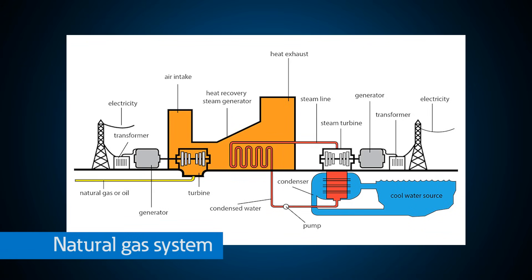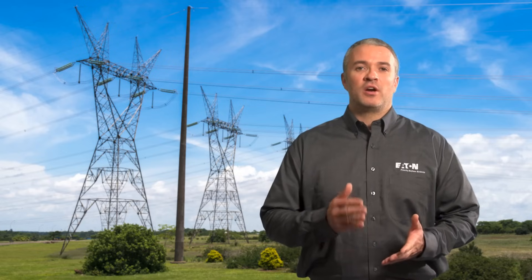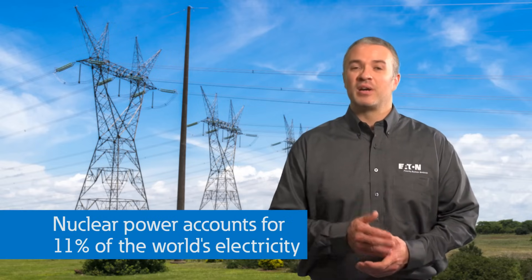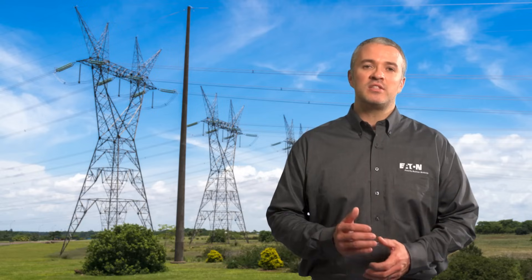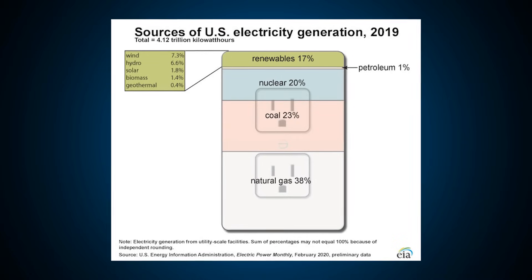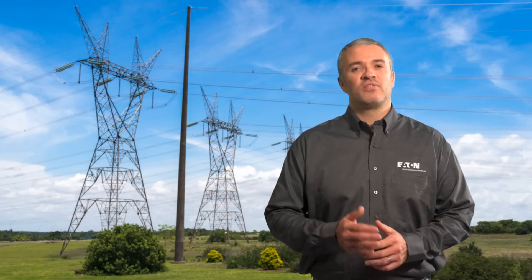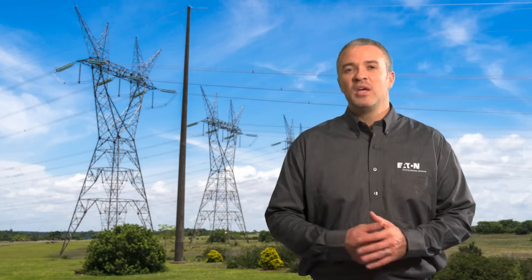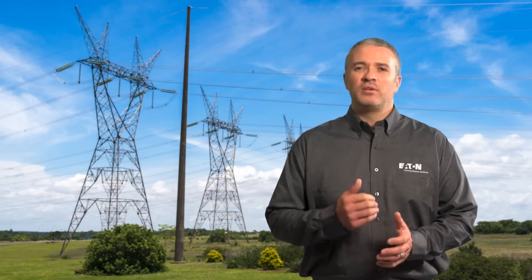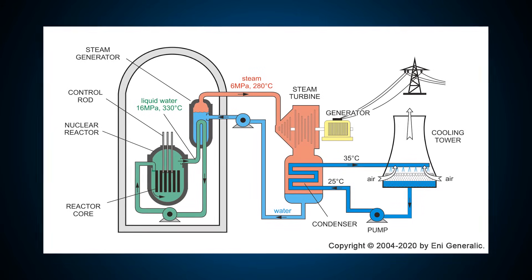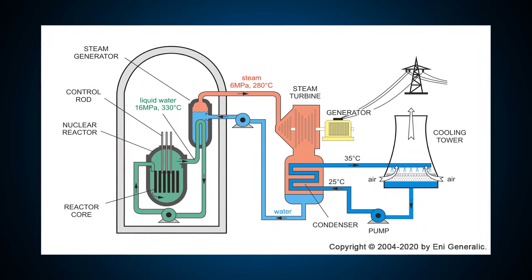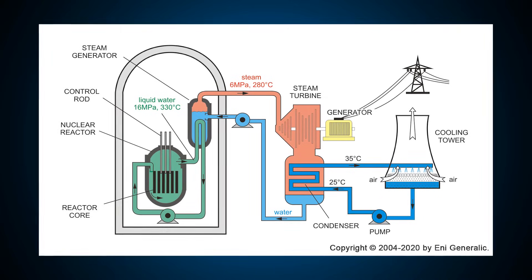Not all fossil fuels are used to heat water to produce steam. Natural gas power plants can burn natural gas mixed with a stream of air, which combusts and expands through a gas turbine to spin as its primary mover. Nuclear power plants are another type of generation source, providing about 11% of the world's electricity. In the United States, it provides around 20% of the electricity used. These plants operate similarly to fossil fuel plants by heating water to produce steam, except they don't burn fuels. Nuclear power plants get their heat from fission of uranium atoms, which releases energy that heats the water to about 520 degrees Fahrenheit.